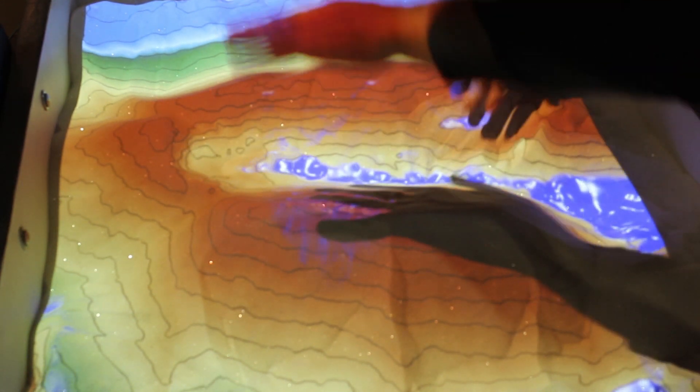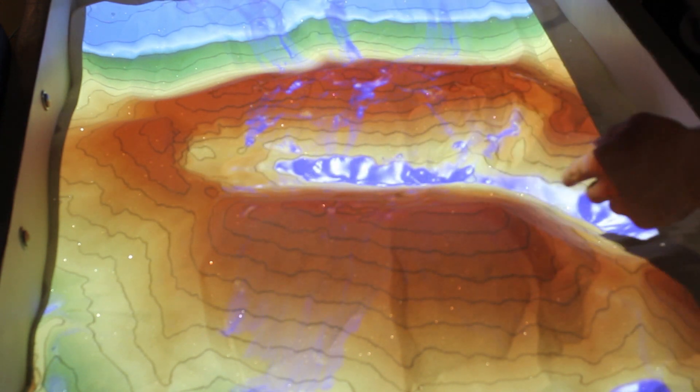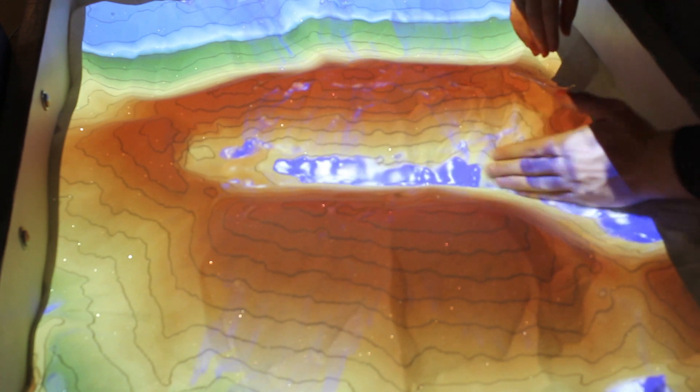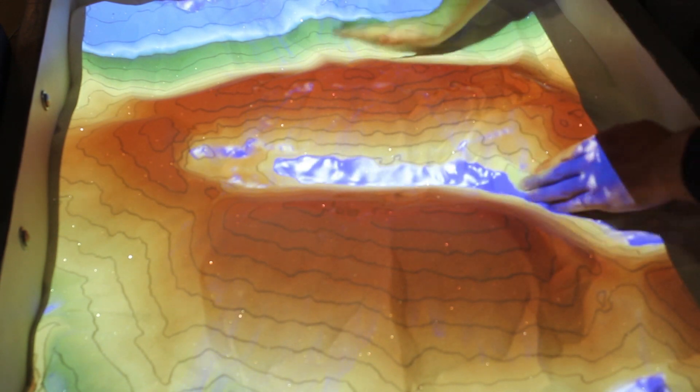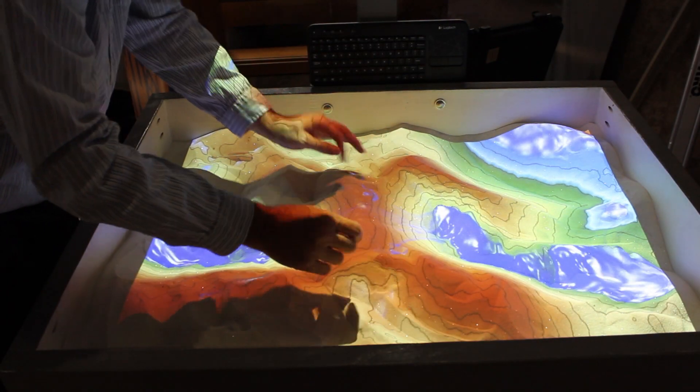By directly manipulating the terrain surface, students discover how the patterns of contour lines differ between steep slopes and shallow ones. The color gradient helps students relate what they interact with in the model to the real world, from snowy mountaintops to lush green valleys.